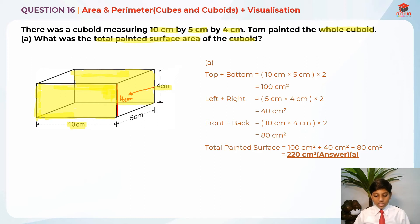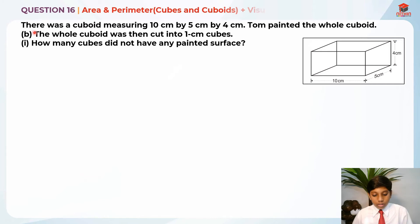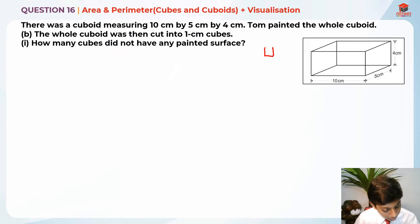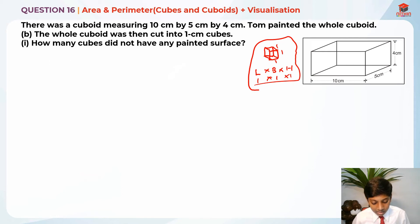Let's move on to Part B. The whole cuboid was then cut into 1 cm cubes. How many cubes did not have any painted surface area? 1 cm cubes are cubes with all dimensions of 1 cm only, so l × b × h is 1 × 1 × 1. They're asking how many of these cubes have no painted surface area.